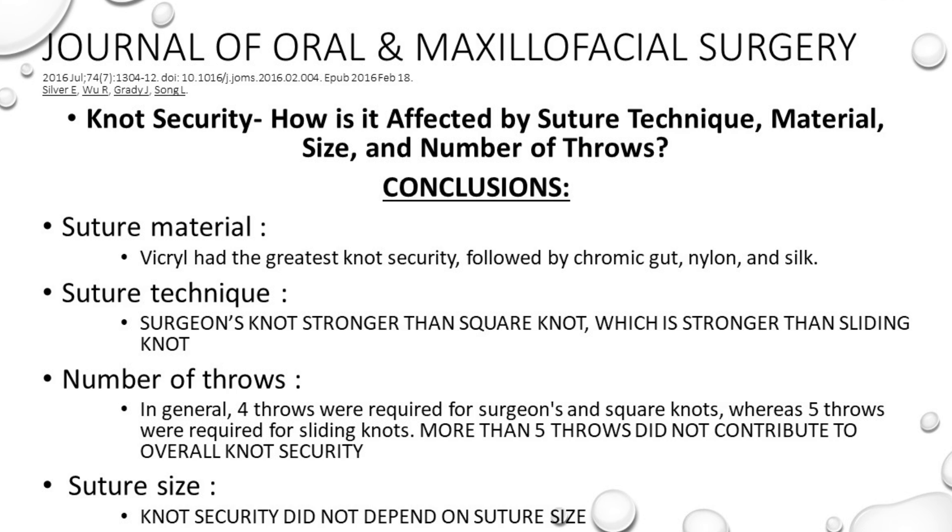So suture material vicryl had the greatest knot security followed by chromic gut, nylon, and silk. Suture technique the surgeon's knot was stronger and the best and that's when you do two loops on your first throw. That makes it a surgeon's knot not a square knot. And in general if you're doing a surgeon's knot four throws were pretty good and solid and suture size did not matter when it came to this.